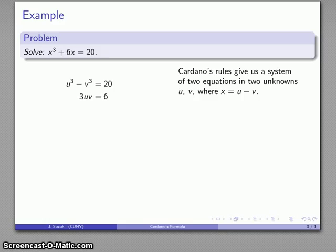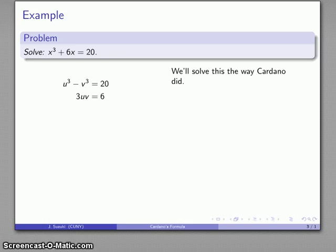Now this is a fairly standard system of nonlinear equations in two variables, and we can actually solve this using any number of methods. But let's take a look at how Cardano solved this method, because there's some particularly interesting insights that result from it. So the first thing I'll do is I'll solve for uv by dividing both sides by 3, and then I'll cube both sides. So I get u³v³ = 8.